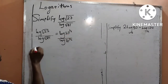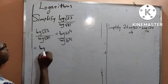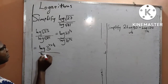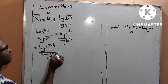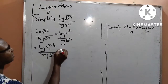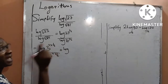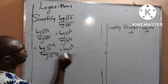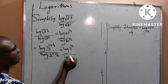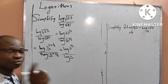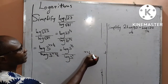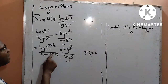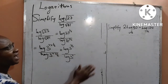Therefore, I shall be having from here: log of 27, which is now 3 raised to power 3 applied by half, divided by log of 81, written as 3 raised to power 4 applied by half. So if I work on that, I shall be having the log of 3 raised to power 3 over 2 at the numerator, and at the denominator, the log of 3 raised to power 2, because 4 times 1 over 2 equals 2.